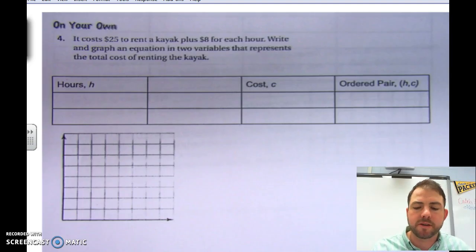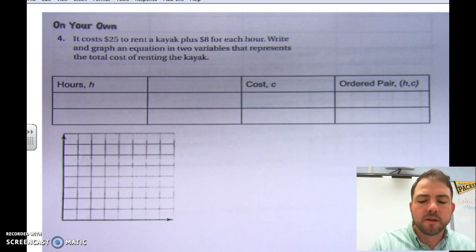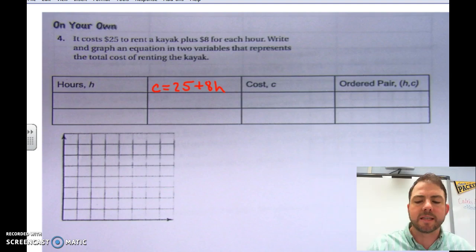Now, what we're going to do is we're going to go to the next page here. And here's your notes. We're going to transfer that equation into this data table. So, C equals 25 plus 8H.